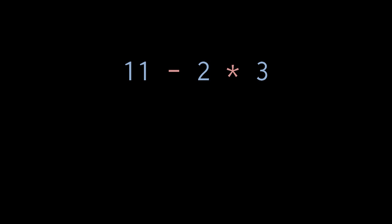So here, for example, when you write 11 minus 2 times 3, the multiplication operation is performed first because the multiplication operator has a higher precedence than the subtraction operator.